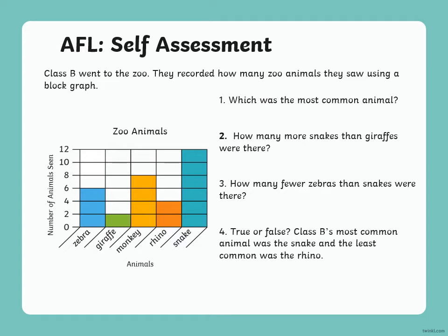Class B went to the zoo. They recorded how many zoo animals they saw using a block graph. With the help of the block graph, you have to answer these questions: Which was the most common animal? How many more snakes than giraffes were there? How many fewer zebras than snakes were there? And the last one — true or false: Class B's most common animal was the snake and the least common was the rhino.